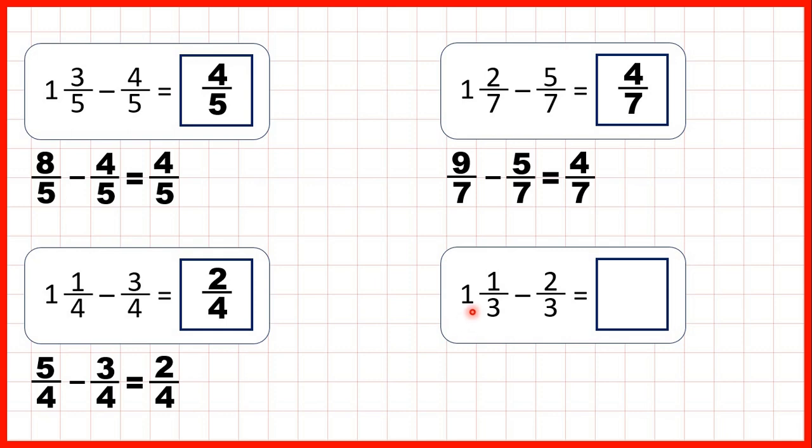And finally, 1 and 1 third minus 2 thirds. So we can change 1 and 1 third to 4 thirds. 1 times 3 is 3, plus 1 is 4. So now, when we take 2 thirds away, we get 2 thirds as our answer.